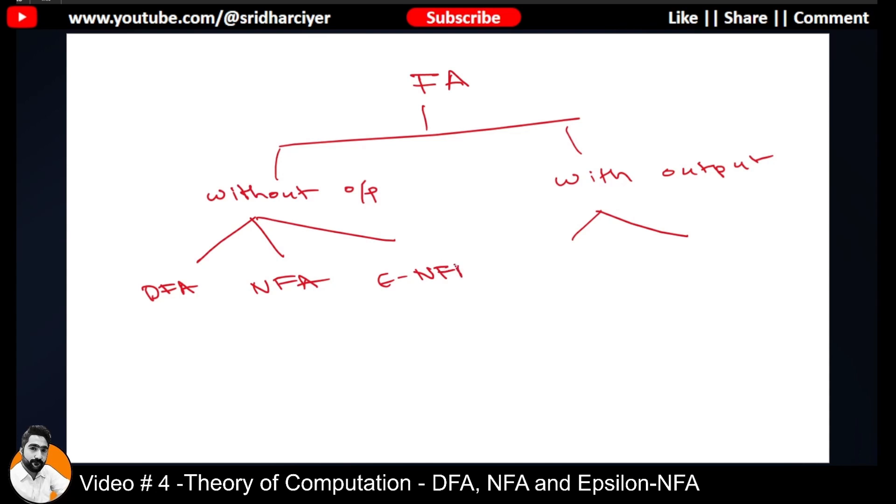That is what we are going to learn in this lecture. On the other hand, with output, the FAs are what we call Moore machine and Mealy machine. So we are going to focus on this today: DFA, NFA, and Epsilon NFA. So where is FSM in the picture? FSM is nowhere.